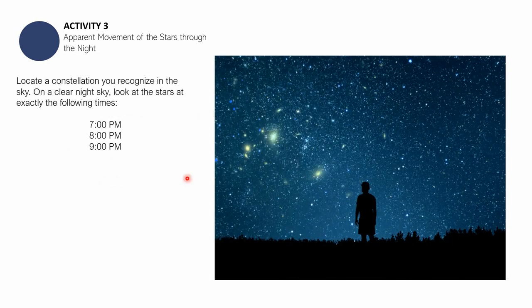So what you need to do is at 7pm, you have to locate a constellation that you recognize in the sky. Remember in the previous session, you were asked to identify one constellation so you can use that constellation in this activity. So in the clear night sky, you have to look at the stars at exactly the following times: at exactly 7pm, you have to observe the location of that star that you selected, say for instance, the Little Dipper. And then you just have to go back after an hour, which is around 8pm, and then you can go back at around 9pm.